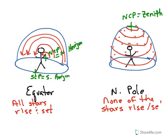In the middle latitudes, it's going to be somewhere in between. So you're going to have some stars that circle — and that's going to be your circumpolar zone. Depending on how far north or south you are, you'll either have more stars circling than rise or set, or as you get closer and closer to the equator, you'll have fewer stars circling and more stars rising and setting. And we can picture all of that using the celestial sphere.